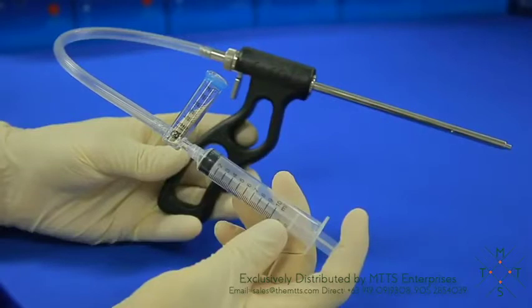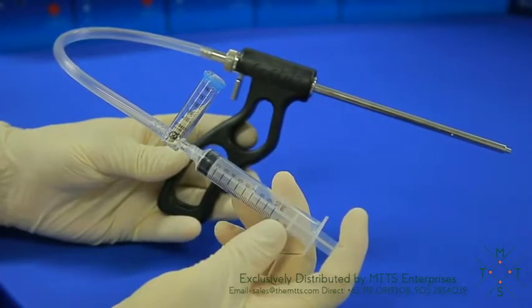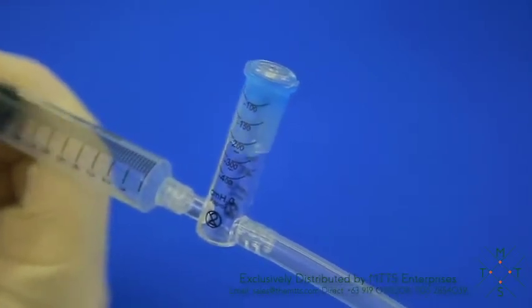The manometer is in minus centimeters H2O increments. It simply connects between the syringe and the tubing, and then the tubing is placed onto the handpiece. It has a blue diaphragm that will react when negative pressure is obtained and maintained.